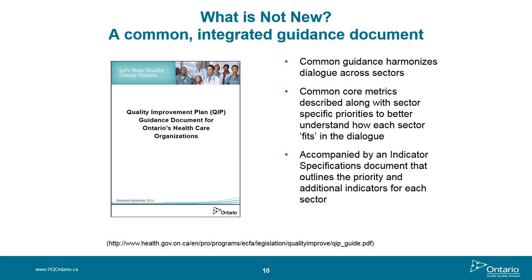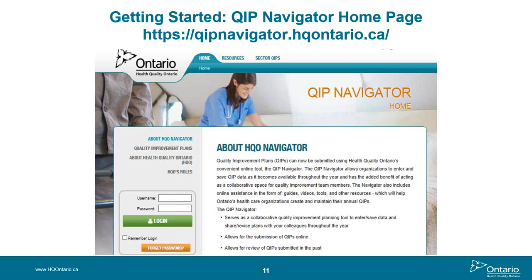The title of this slide provides a direct link to the Navigator home page. You can also reach it by going to Health Quality Ontario's website, clicking on Quality Improvement Planning, and scrolling down to the Navigator button. Once at the Navigator home page, you'll see tabs across the top for Home, Resources, and Sector QIPs. On the home page, there are also links on the left-hand side with information related to Navigator, about QIPs, about HQO, and your login access.